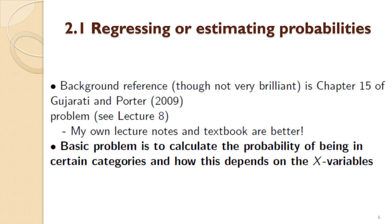I'm intending to write a textbook from this material, so you should have quite a lot of complete teaching resources available that are better than the Gujarati and Porter textbook. I appreciate these are far from ideal teaching conditions, but you should have high quality resources available. The basic problem, in terms of regressing or estimating probabilities, is to calculate how the probability of being in certain categories — usually one of two — depends on the X variables in your question.